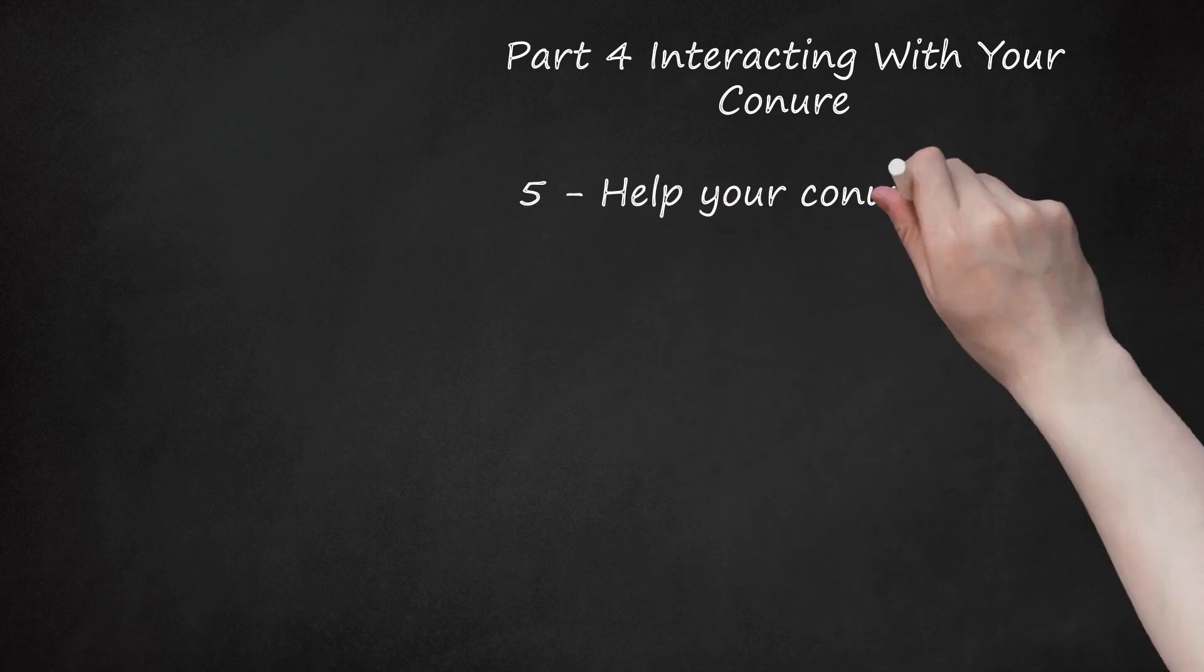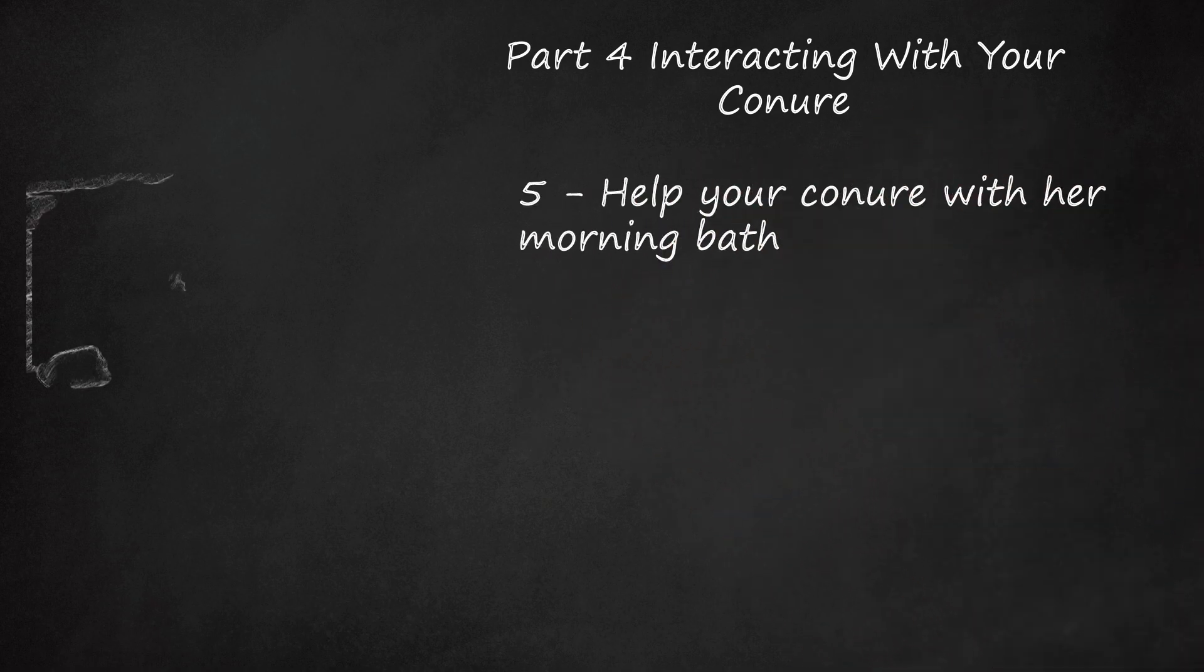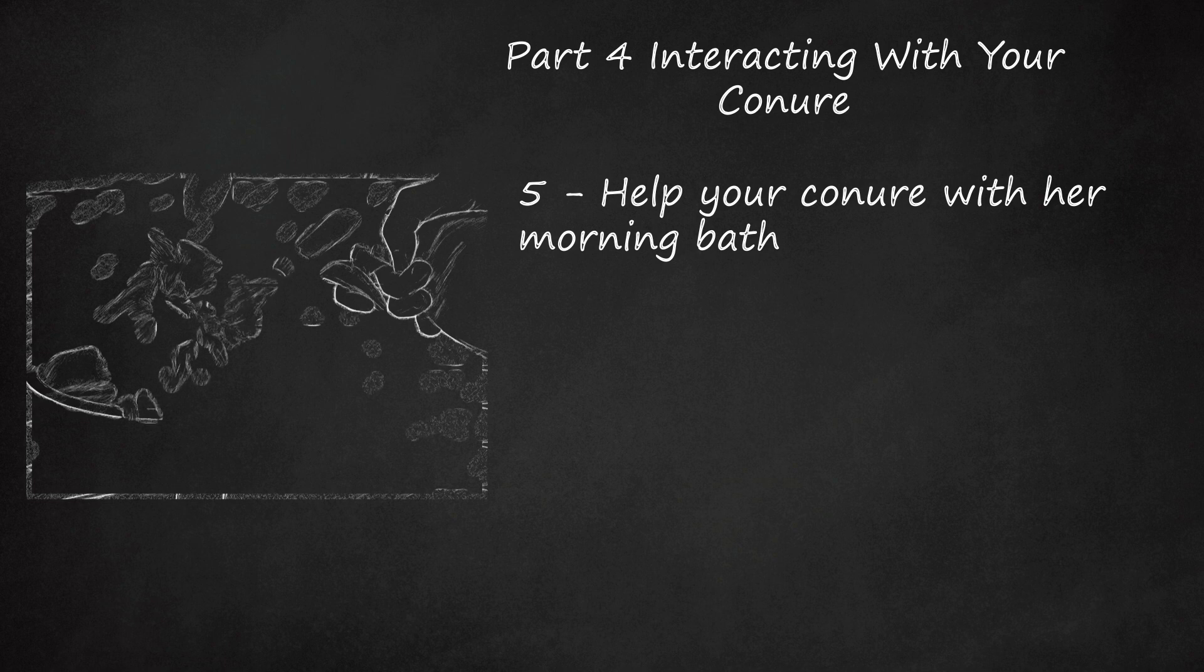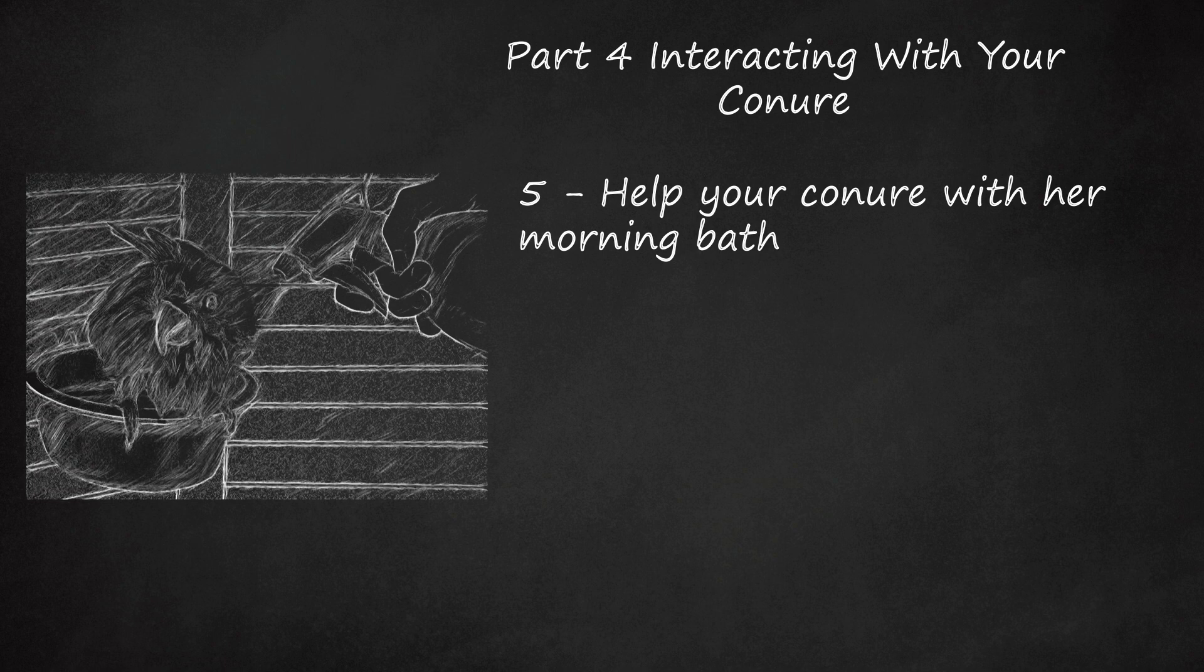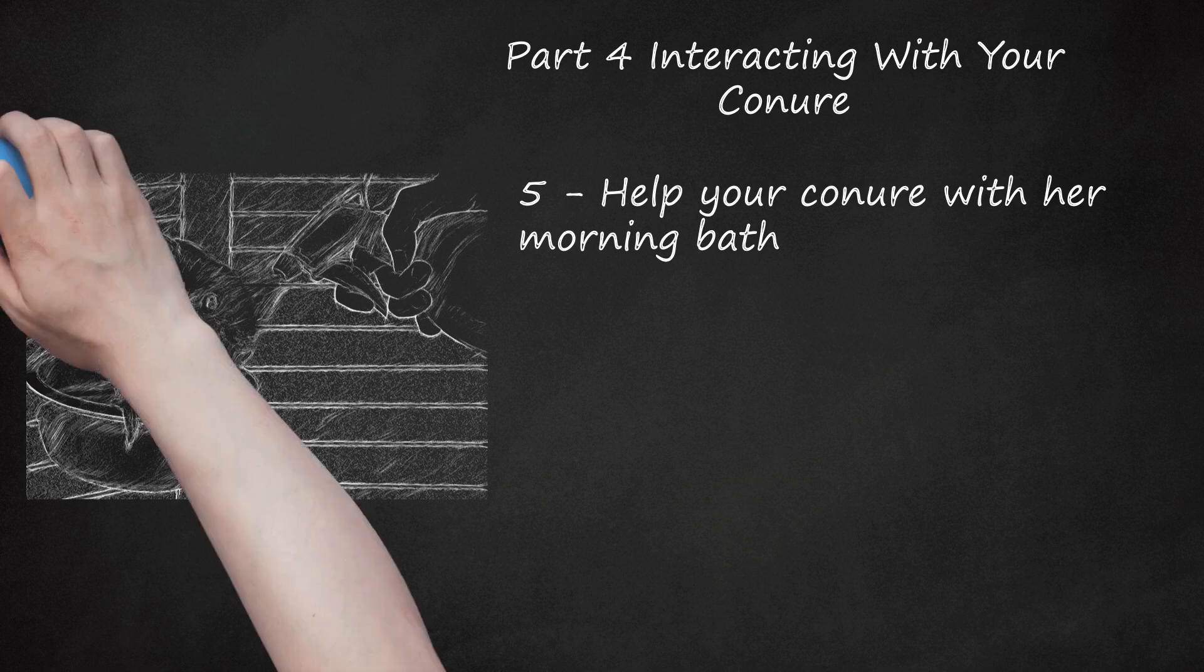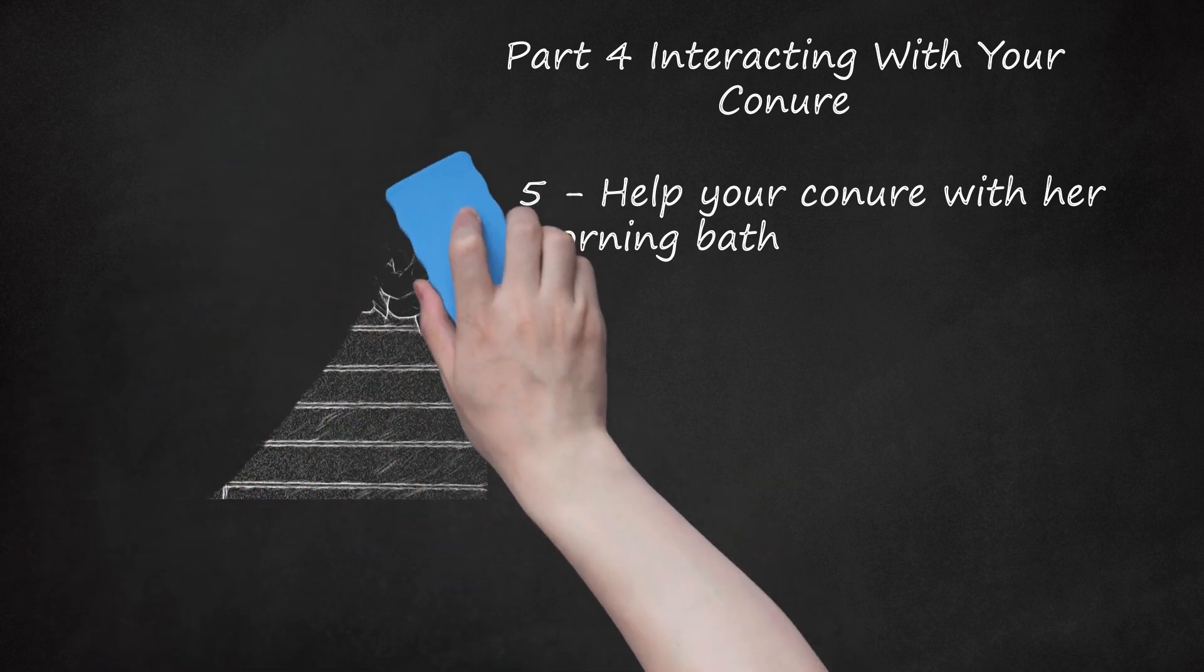Help your conure with her morning bath. Another way to interact with her is to help her take her morning bath. Use a spray bottle to gently spritz her with a mist of water. If she will let you, gently wrap your conure in a towel after her bath and hold her close to you until she is dry. Conures are very cuddly, so your conure will probably enjoy being so close to you after a good bath. When she is dry, your conure will preen herself. To preen, she will use her beak to reach back to her oil gland, located at the base of her tail, and spread the oil over her plumage.